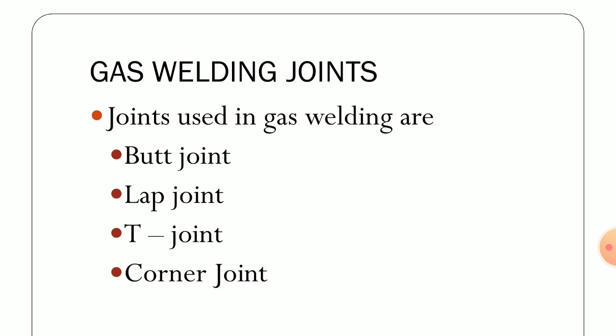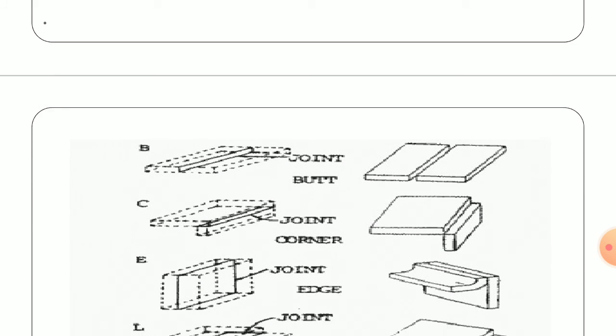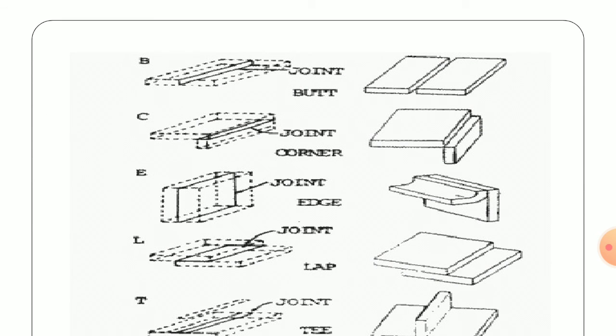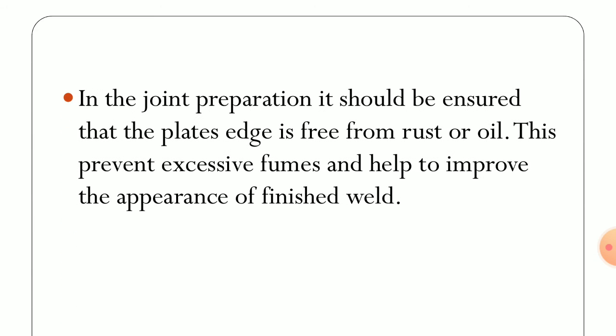Different types of joints can be generated with this process: butt joint, lap joint, T-joint, corner joint, and more — it is not restricted to those types. Several types of joints can be generated. It is a very handy and easy-to-operate welding technique, though we must take precautions and be conscious while releasing pressure through the valves.